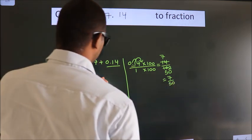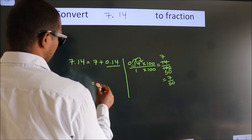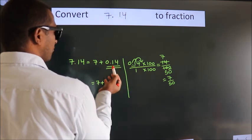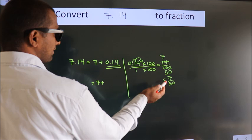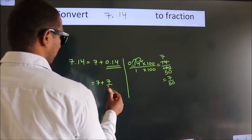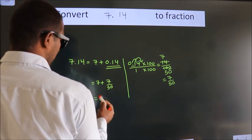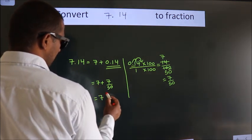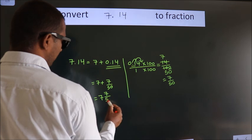Now here, 7 plus, in place of 0.14, we write this fraction 7 by 50. 7 plus 7 by 50. In mixed fraction it is 7 and 7 over 50.